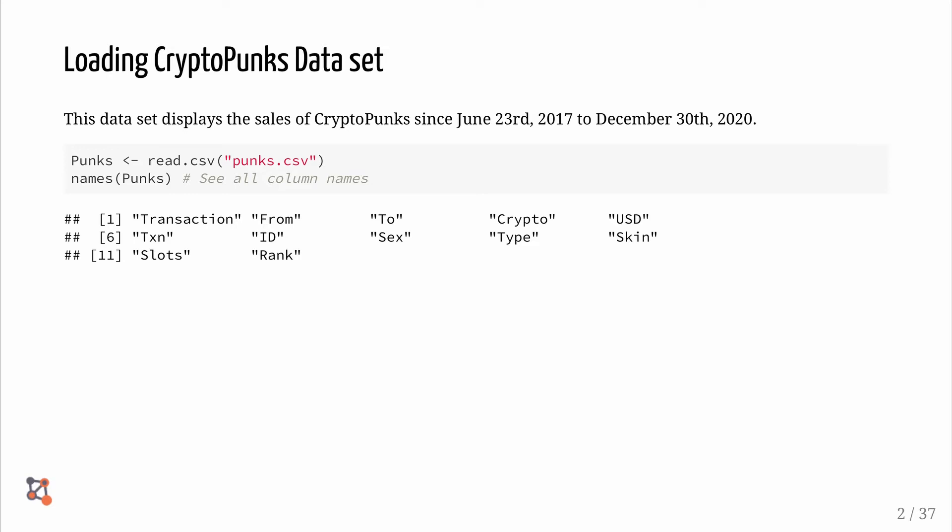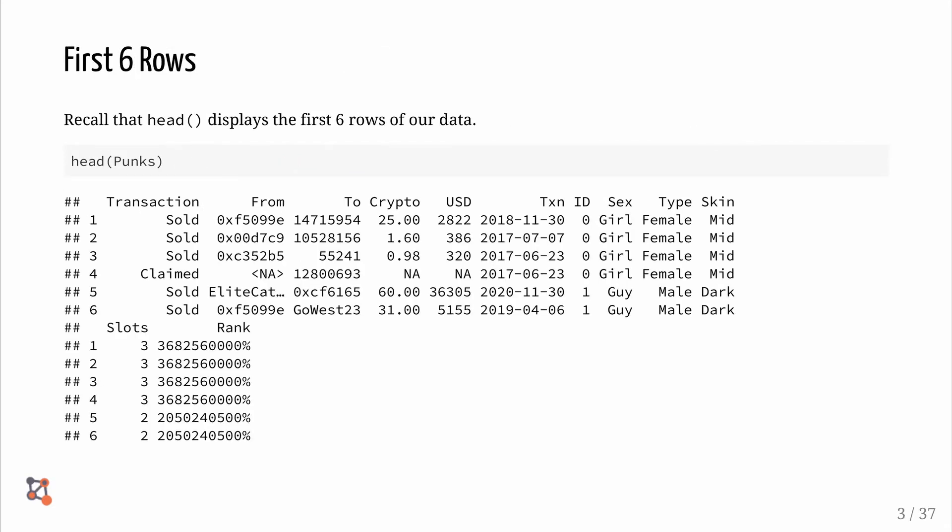First, let's load the CryptoPunks dataset from the previous video. This dataset displays the sales of CryptoPunks since June 23, 2017 and ends December 30, 2020. We use the read.csv command to read the dataset into R. Then, we use the names command to see the columns in the dataset. We use the head function to look at the first six rows of the dataset. The results are below.